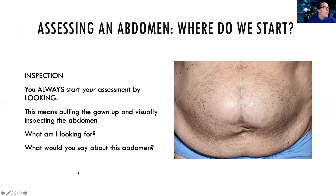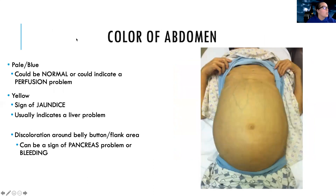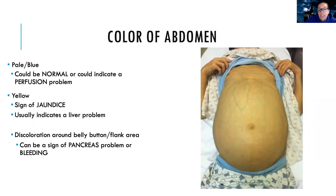Let's go deeper into inspection, starting with color. Pale or blue could be normal for the patient depending on their baseline, but it could also indicate they're not getting good perfusion to that area. Yellow is common in patients with liver problems — it's a sign of jaundice. We also want to note any discoloration around the belly button or flank area. When we talk about pancreatitis, we talk about the Cullen sign or the Gray-Turner sign — these are discolorations or bruisings around the belly button or flank area, which can be a sign of internal bleeding or a pancreas problem.